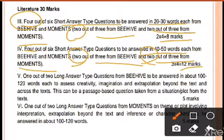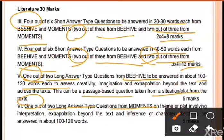And then 5 marks long answer type questions. First one from Beehive will have 2 questions, we will do 1. We will have to write 100 to 120 words. So we will complete 30 marks in the literature subjective section.